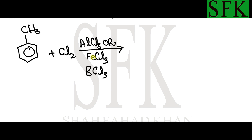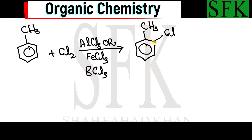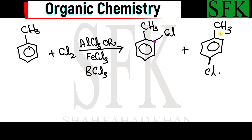These are the three possible catalysts used in this reaction. We basically get two products: one is 2-chloromethylbenzene, where the chlorine atom is on the second carbon atom, and the second compound is 4-chloromethylbenzene. Both are major products — 50% is 2-chloromethylbenzene and 50% is 4-chloromethylbenzene, so they are in a 1:1 ratio.